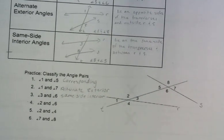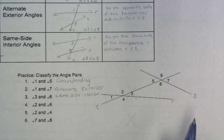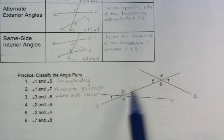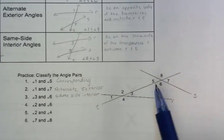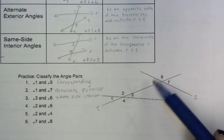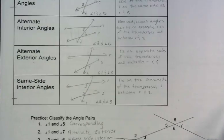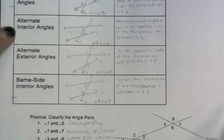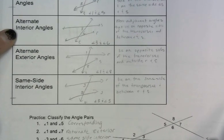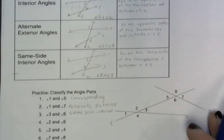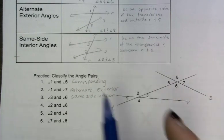Angles 2 and 6: comparing them to the transversal, they're on opposite sides and they're in between the parallel lines. Opposite sides means alternate, and in between means interior. So 2 and 6 are alternate interior.